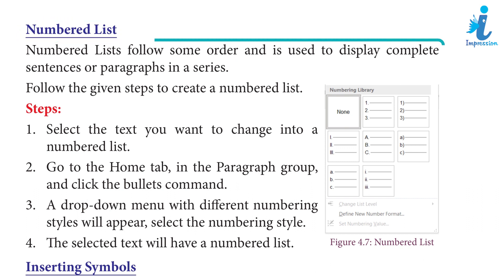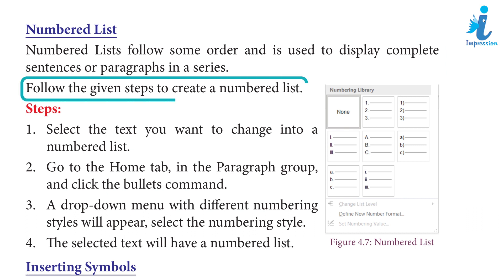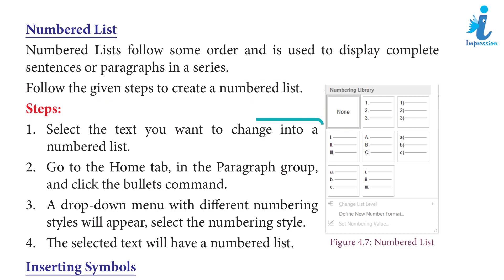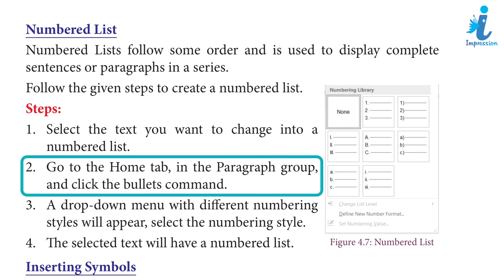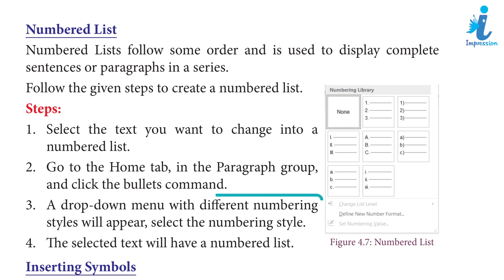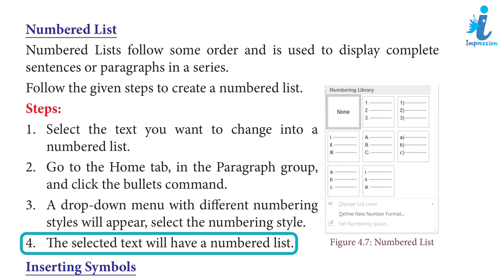Numbered List: A numbered list follows some order and is used to display complete sentences or paragraphs in a series. Follow the given steps to create a numbered list. Step 1: Select the text you want to change into a numbered list. Step 2: Go to the Home tab in the Paragraph group and click the Numbering command. Step 3: A drop-down menu with different numbering styles will appear. Select the numbering style. Step 4: The selected text will have a numbered list.